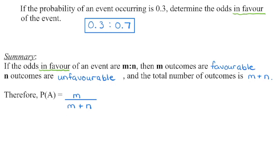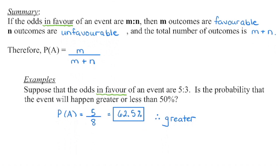If we know that the probability of an event occurring is 0.3, or 30%, the odds in favor of that event occurring — the favorable outcomes are 0.3 — and there is a 1 minus 0.3, which is 0.7, chance that the event will not occur. Together these add up to 1, representing all possible outcomes. When given the odds in favor and asked to determine probability, favorable outcomes becomes the numerator and adding them together gives the total outcomes. For example, 5 to 3 odds in favor means 5 divided by 8, which we can multiply by 100 to see we are above 50%, meaning we have a greater chance of that event occurring.